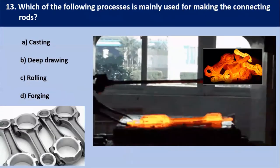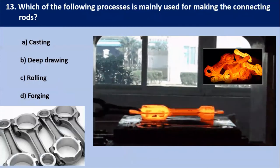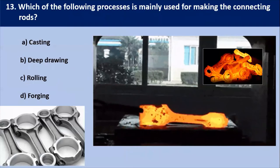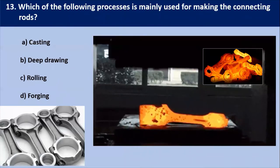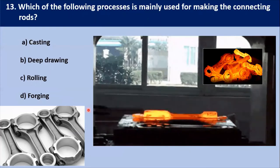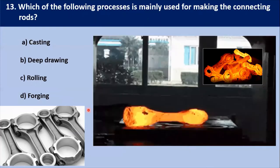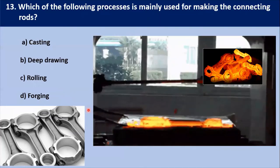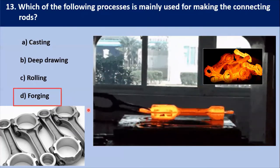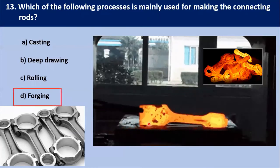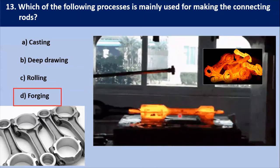Which of the following process families is mainly used for making the connecting rod? Connecting rods are generally manufactured by forging operations. In forging, a hammer is used which strikes on the heated metallic part to get the desired shape. That's why the answer here is forging — you can see how we are making the connecting rod.